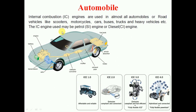Here we can see the main parts of this automobile internal combustion engine system. The engine is the core, connected to a battery which supplies power to accessories. The transmission transmits power to the wheels via the axle. A catalytic converter reduces emissions, a muffler reduces exhaust particles, and an exhaust pipe expels gases to the atmosphere. Shock absorbers absorb shocks, the brake is used for braking, and the fuel tank supplies fuel to the engine.